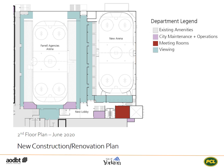The second floor plan identifies the further refinements envisioned for spectators in either the new arena or the Farrell Agencies arena. Upon entry up to the second level, spectators can choose to enter either arena depending on the event. Each arena can be fully separated or, if desired, have joint circulation. As patrons move down the corridor for the Farrell Agencies arena, they will be able to access the seats directly, providing more space and better circulation than what currently exists.